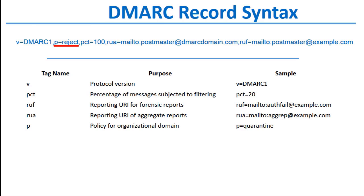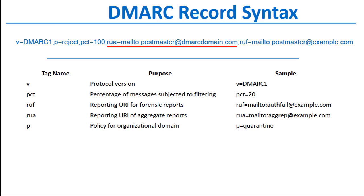In this particular case, this record has a policy of reject. There is a percent equals tag currently set to 100%, so 100% of messages for this domain are eligible for appropriate actions as designated by the DMARC record. We also have tags indicating where aggregate and forensic reports should be sent: the RUA tag is where aggregate reports should be sent, and the RUF tag is where forensic or failure reports should be sent.